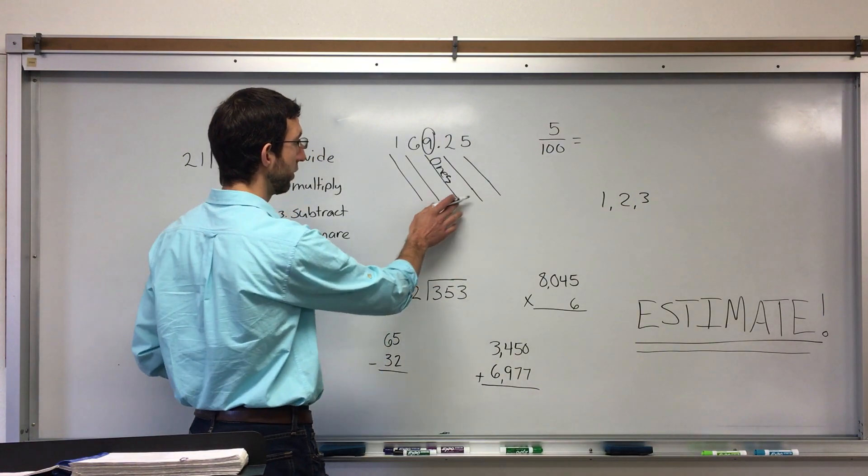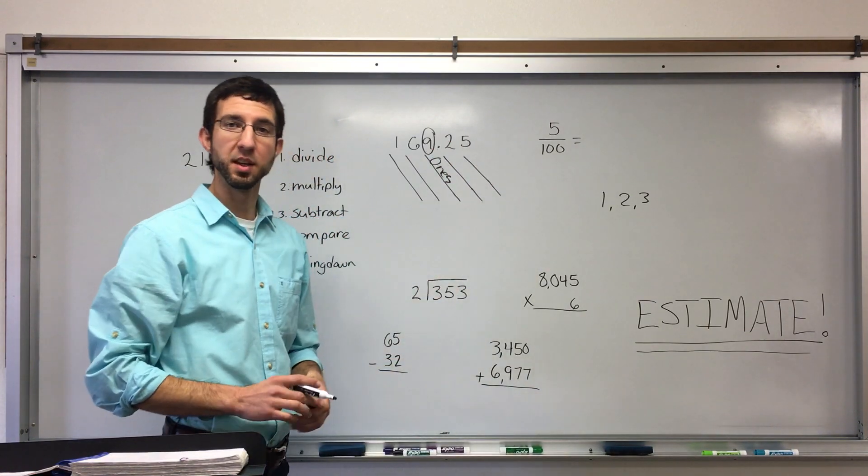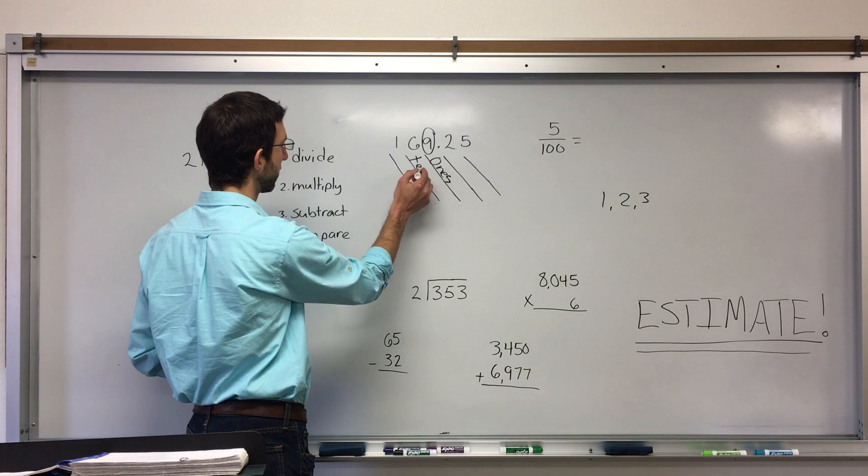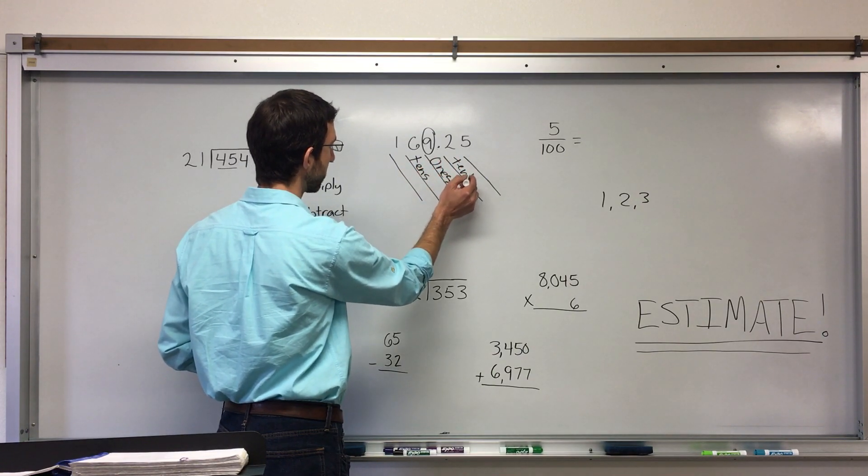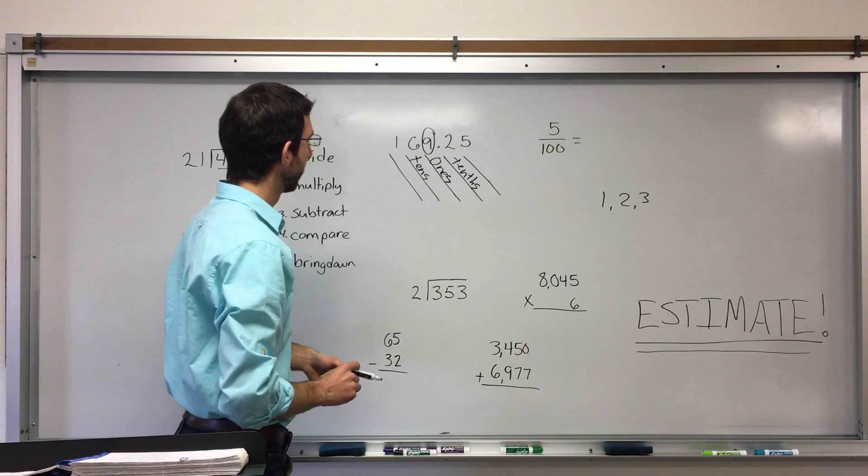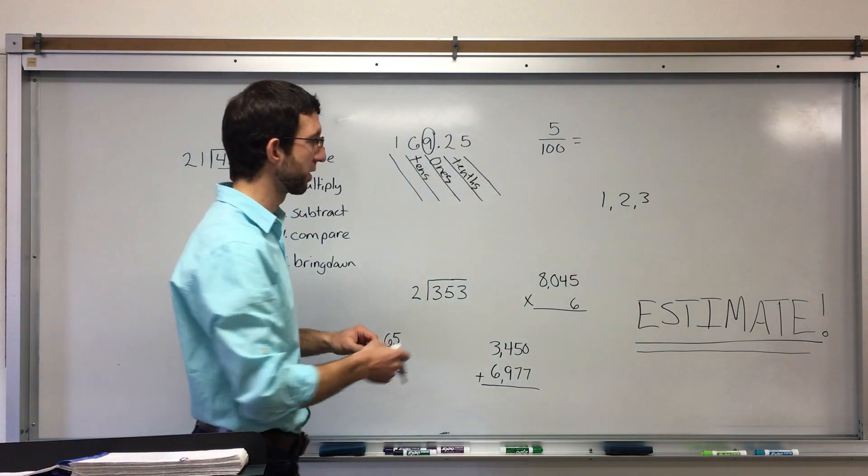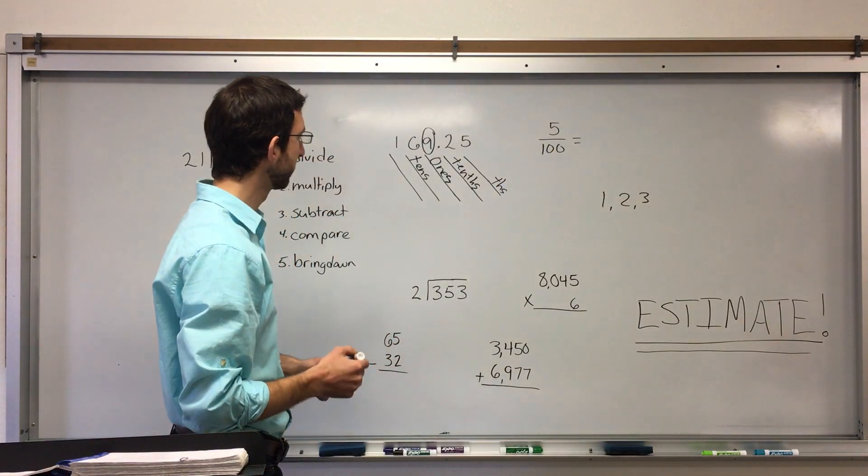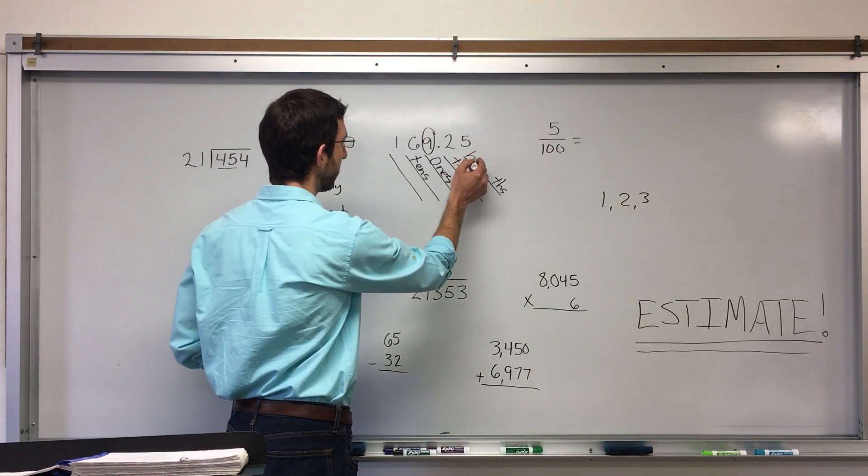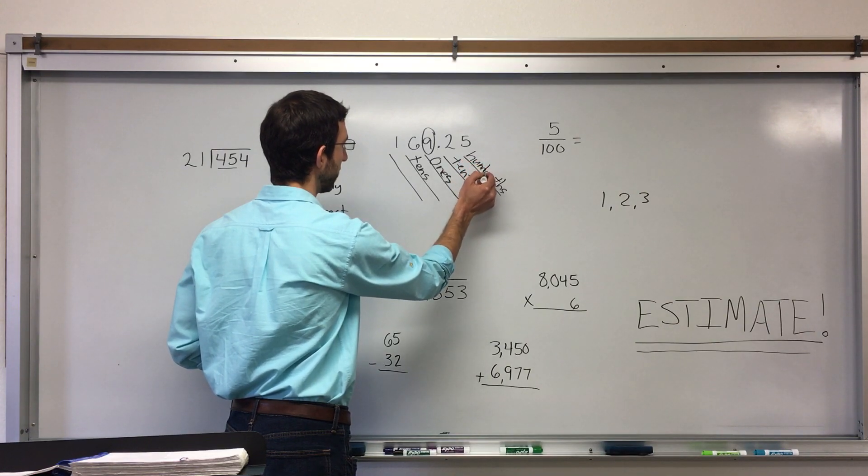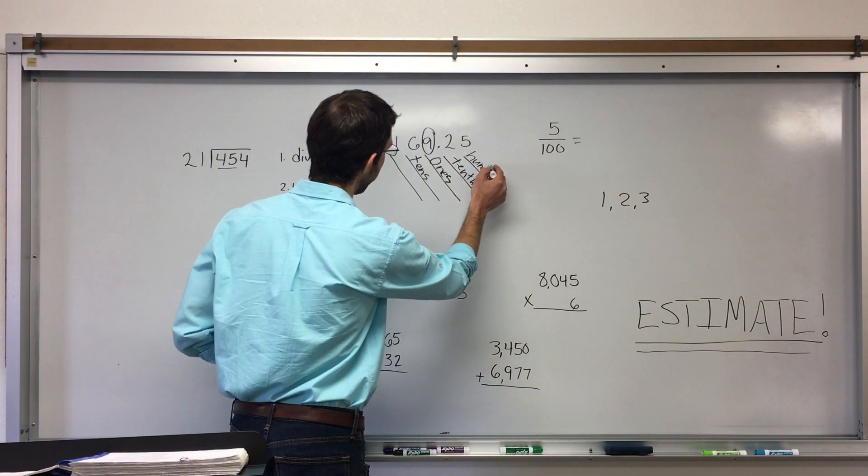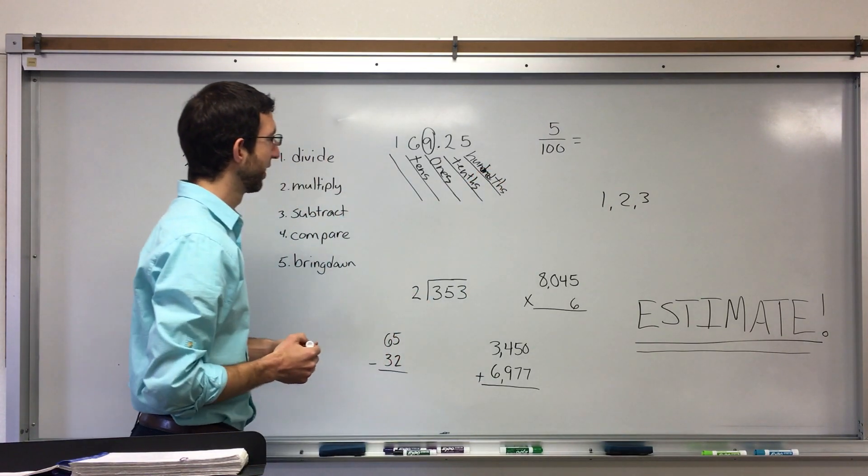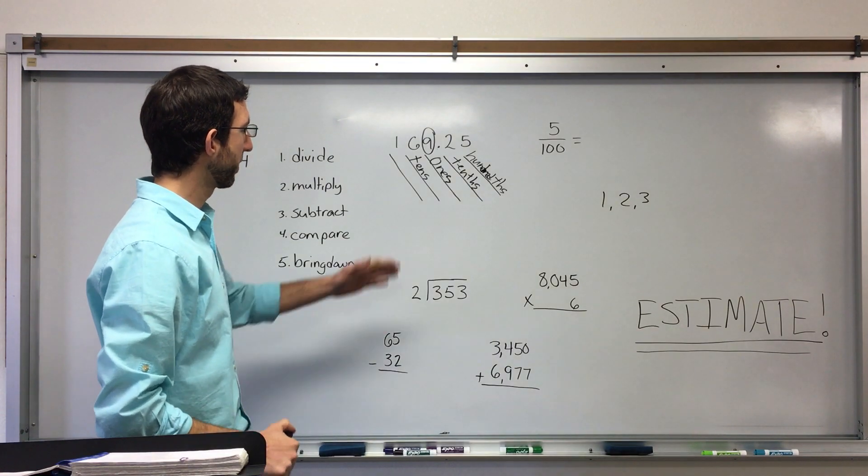Again, it's just that when you go to the right, after the decimal point, you add the T-H-S, right? So this is tens. This is tenths. This is hundreds. This is hundredths, with a THS on the end. Okay, so remember that.